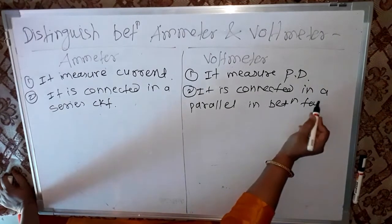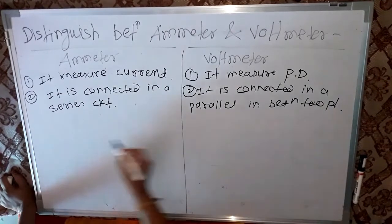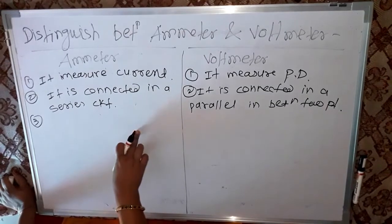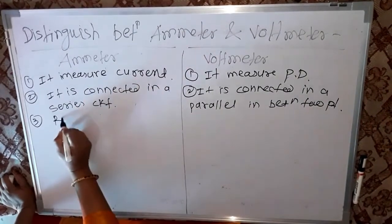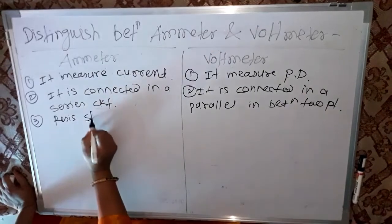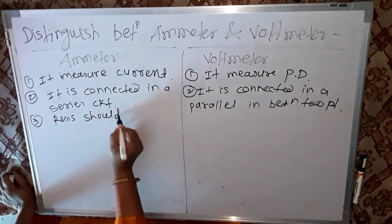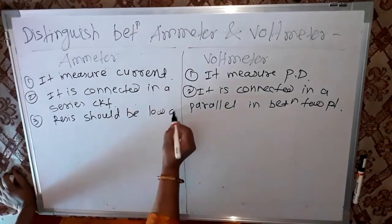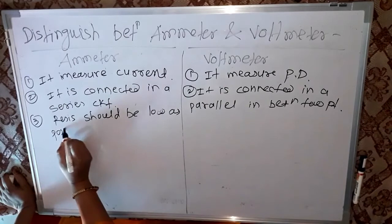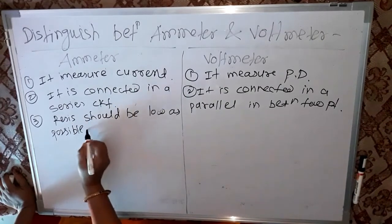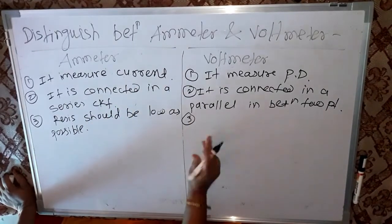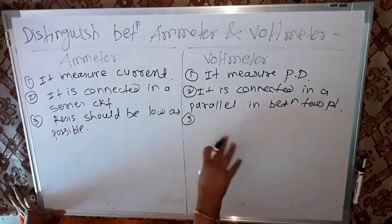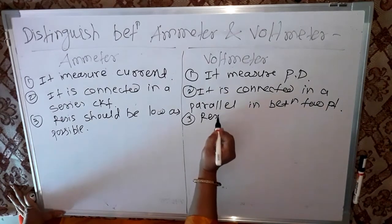Third point: the resistance of an ammeter should be as low as possible. In opposite, the resistance of a voltmeter should be as high as possible.